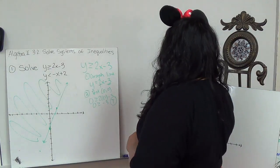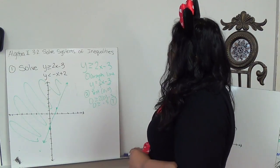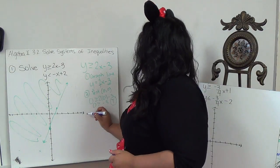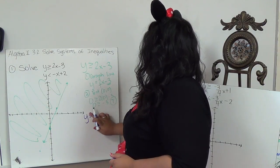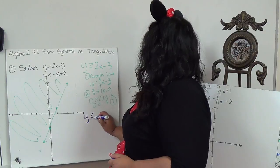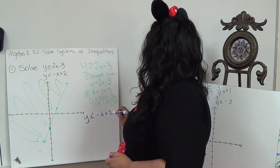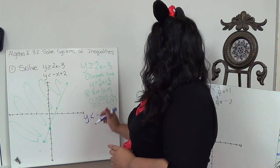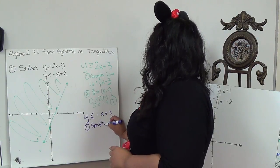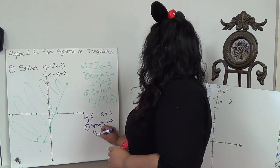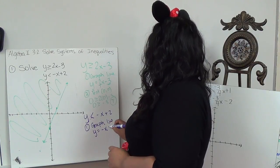0 is bigger than negative 3. So that means I'm shading all of the regions in there. My next line is y equals, sorry, y is less than negative x plus 2. So my first thing is to graph.